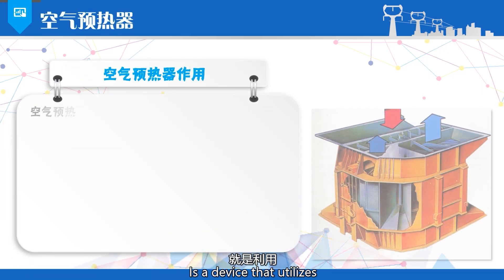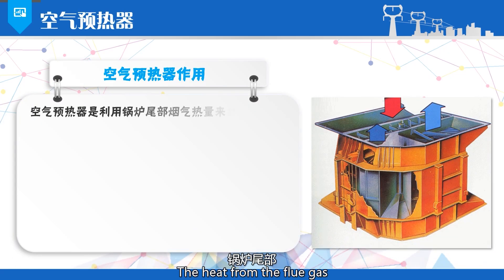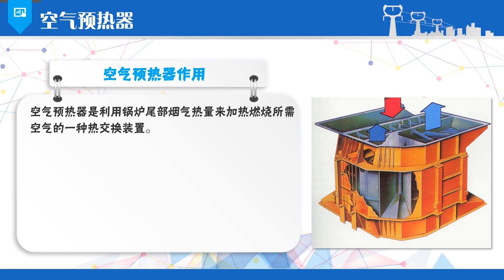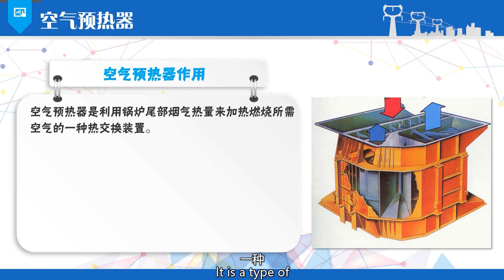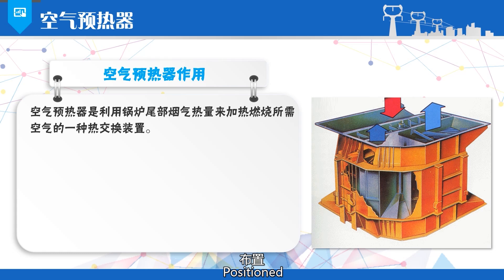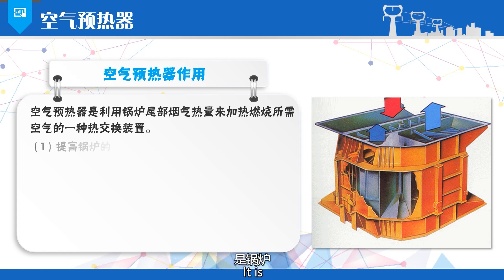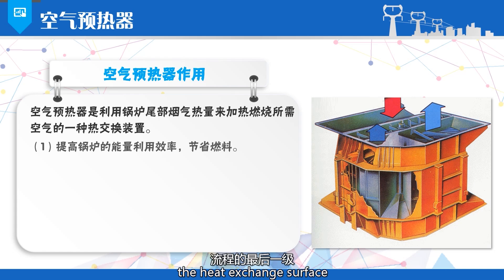The air preheater is a device that utilizes the heat from the flue gas at the rear end of the boiler to heat the air required for combustion. It is a type of heat exchange apparatus positioned at the tail end of the boiler flue, and is the last stage of the heat exchange surface in the flue gas flow path over the boiler.